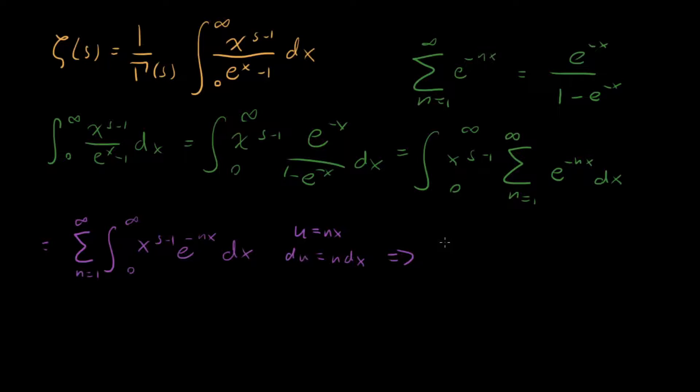Well, what we get is our sum's unchanged, n equals 1 to infinity. Our integral's unchanged, still 0 to infinity. But what happens here? We're going to have our e to the u like we want. Our dx is going to become du over n. And what about our x? Well, our x is equal to u over n. So we're going to have u to the s minus 1 over n to the s minus 1. Hey, now this is starting to look good.